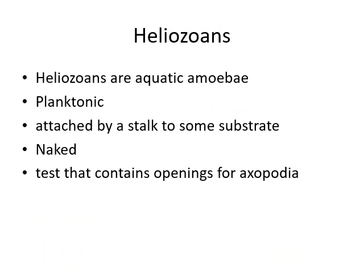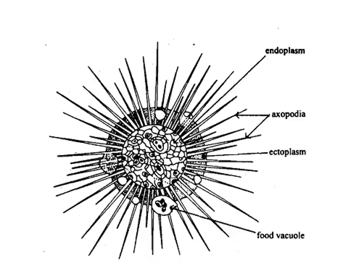Heliozoans are aquatic amoeba that are planktonic — they float in the water — or are sometimes attached by a stalk to a substrate. They are naked with no shell, though some have a test containing openings for axopodia. The diagram shows heliozoans with axopodia, ectoplasm, endoplasm, and furcules.